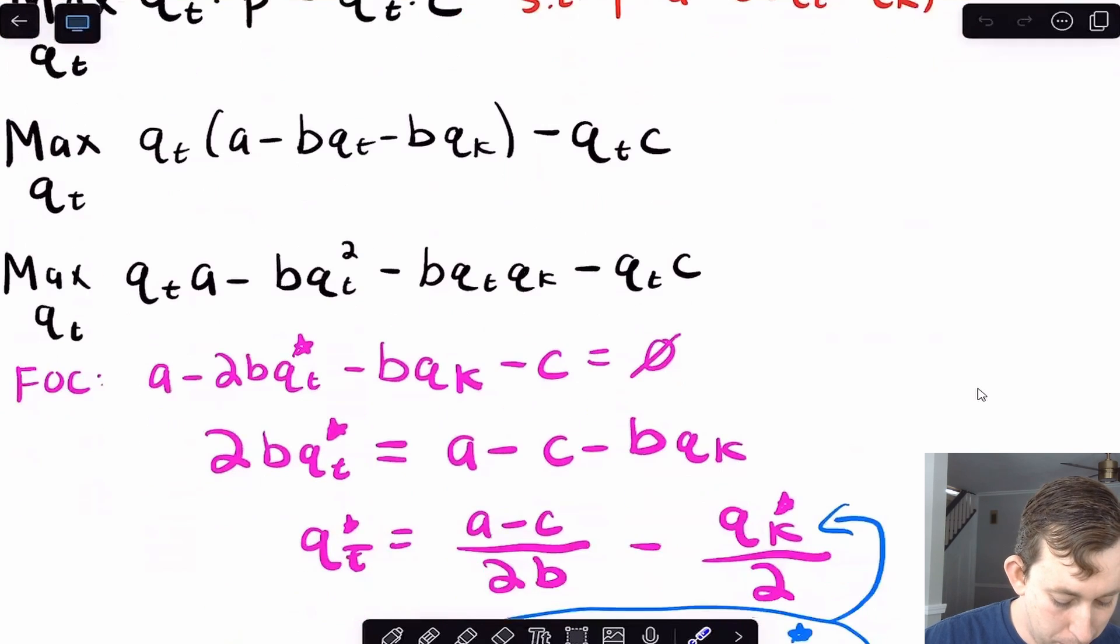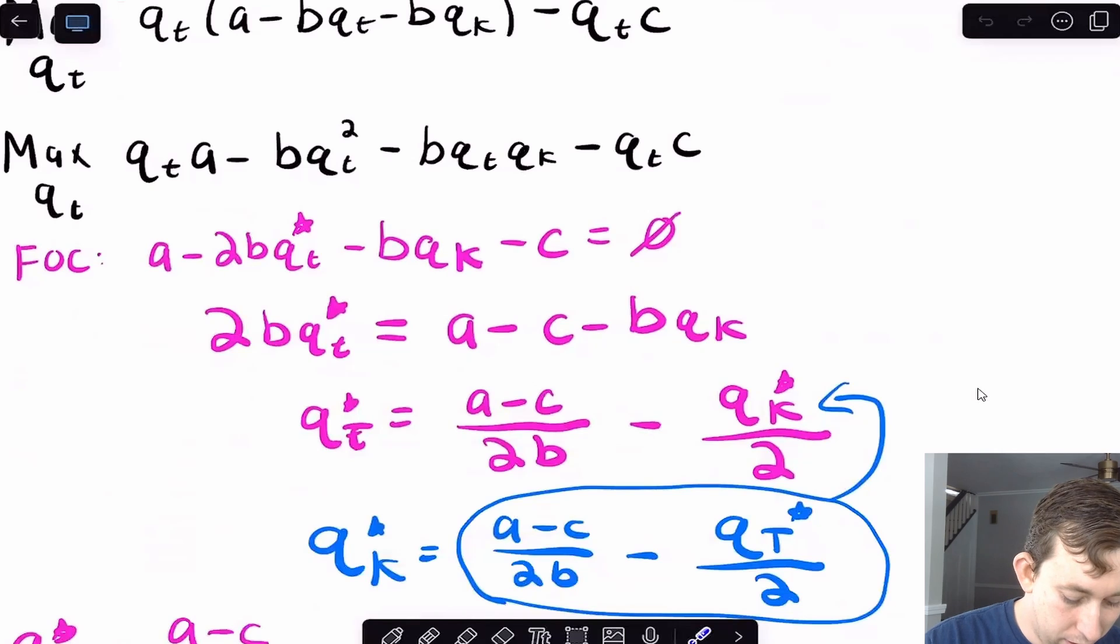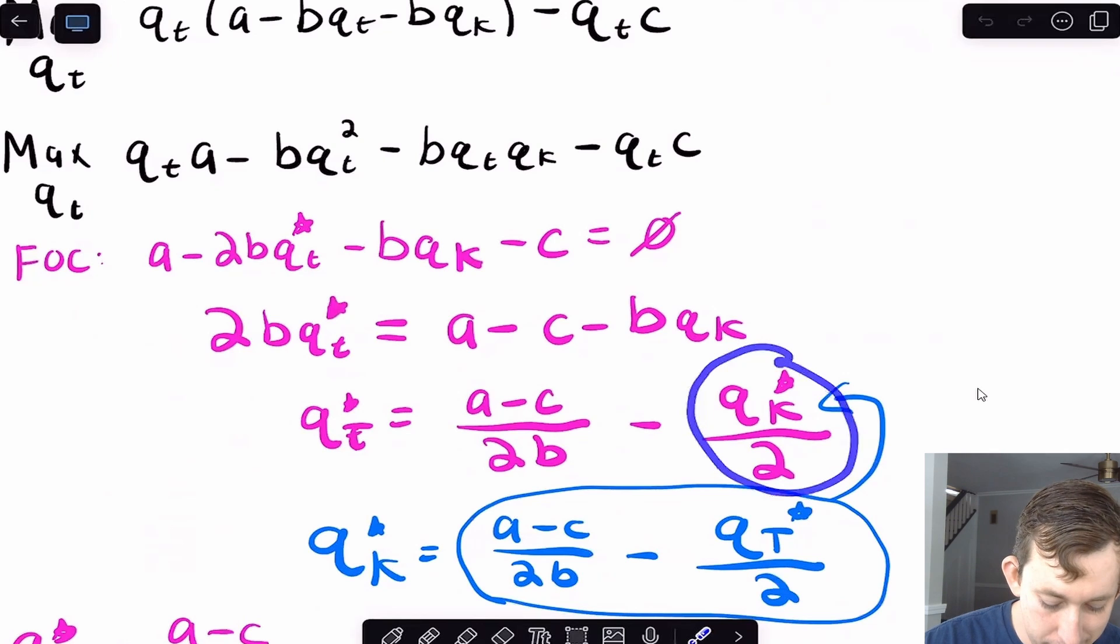And so once I have this, I can take a first order condition of this guy right here. And I'm going to just simplify that. And I'm going to solve for qt star, because we're in a first order condition. So I can put the star up there. And now what you're going to see is I'm going to get that qt star is a minus c over 2b, minus half of what Kristen is making on the other side of the street.